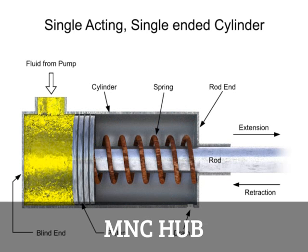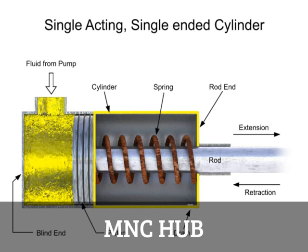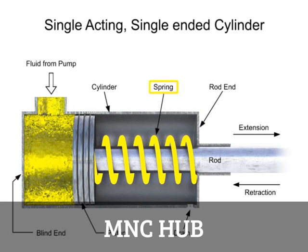A single-acting cylinder is a cylinder in which the working fluid acts on only one side of the piston. The other side of the cylinder utilizes a mechanical load, springs, compressed air, other cylinders, or the momentum of a flywheel to push the piston back in the other direction. This particular cylinder utilizes a spring on the non-fluid side.